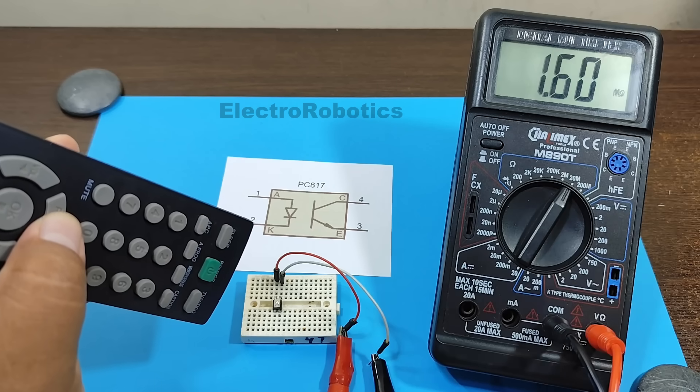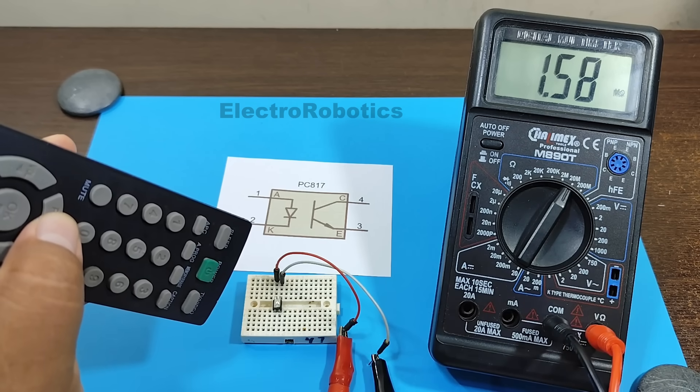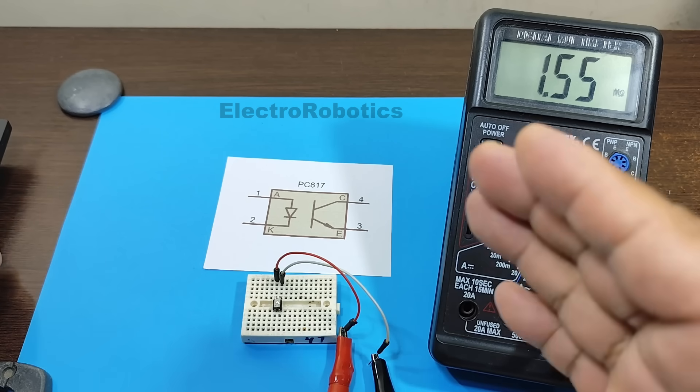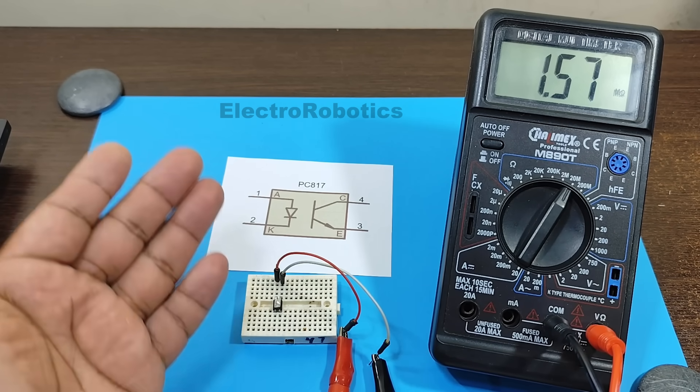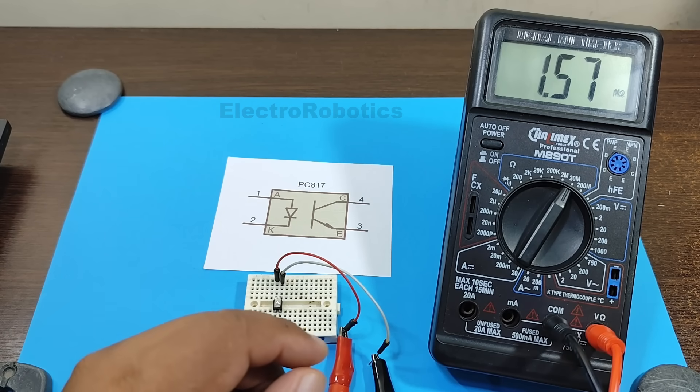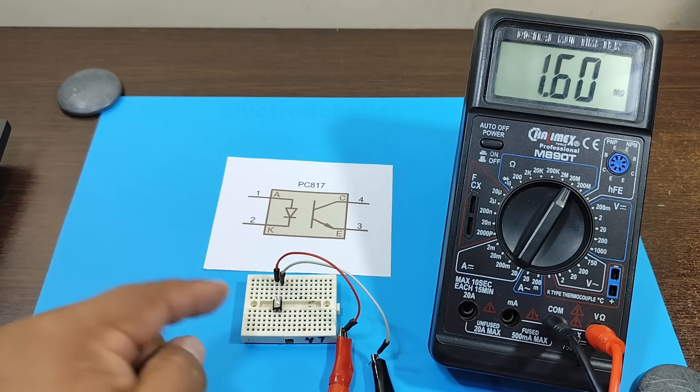It drops to a value below 1 megohm. However, 600 kiloohms is a very large value. That is, we wouldn't be able to see that signal with an LED. Therefore, we're going to make a circuit that can improve this signal.